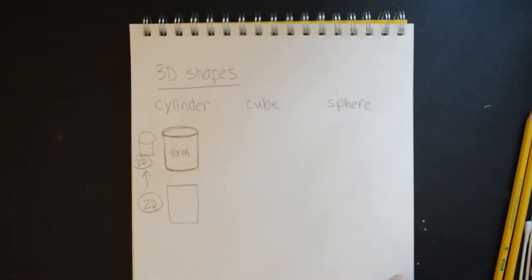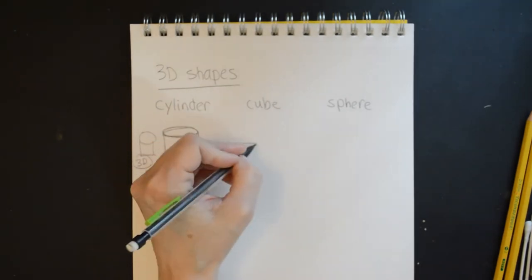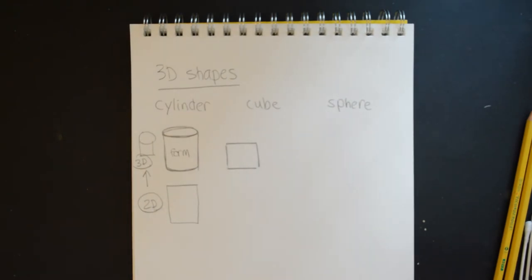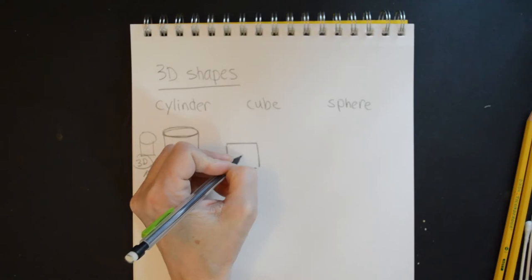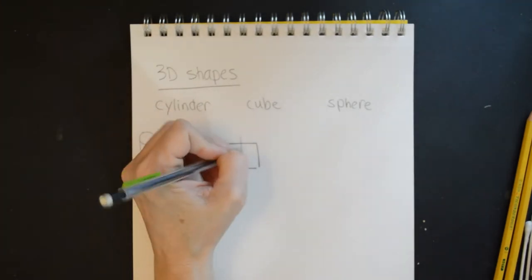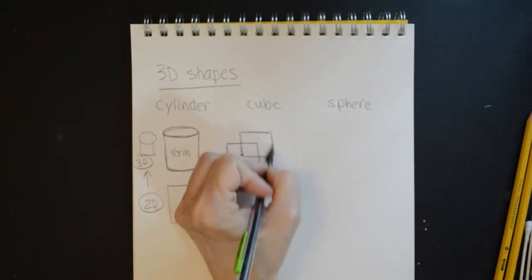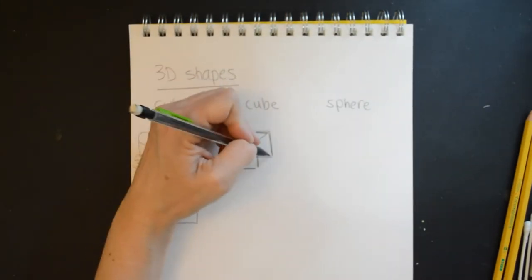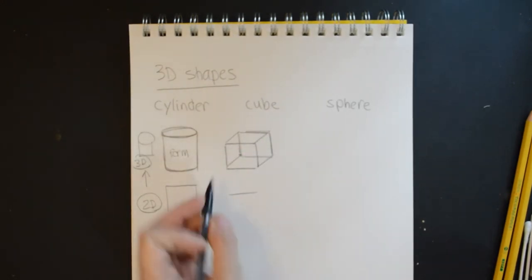For the cube, there are a lot of different ways to draw it. Start by drawing a square and try to keep every side equal. When you're sketching, you're not worried right now about making it look exact. Put a dot in the middle, then draw the same size square in the upper right-hand corner. Connect all of your angled lines at the top and then go to the bottom — and that's it for the cube. The cube's 2D shape is a square.